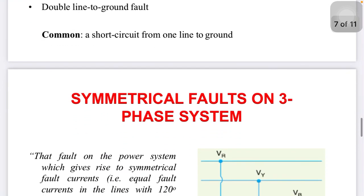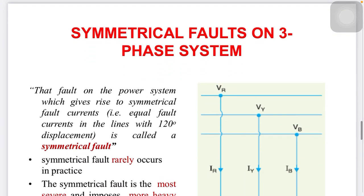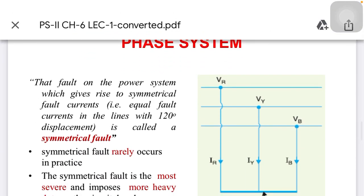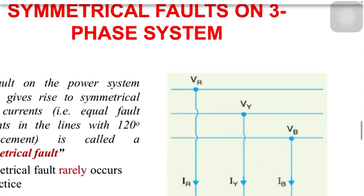Unsymmetrical faults — those faults which give rise to unequal current in each and every phase — are called unsymmetrical faults. Examples include single line to ground fault, line to line fault, and double line to ground fault. The most common fault is single line to ground fault.